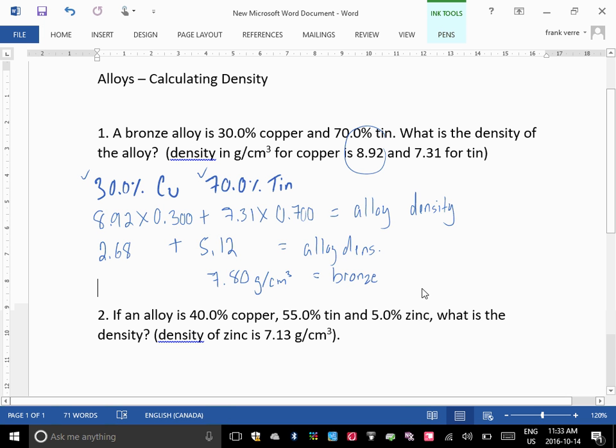Obviously, the density would depend on the percentage, right? How much if it is copper and how much if it is tin. So we're adding, but we're not adding just the densities, we're adding the percentage of the density together.